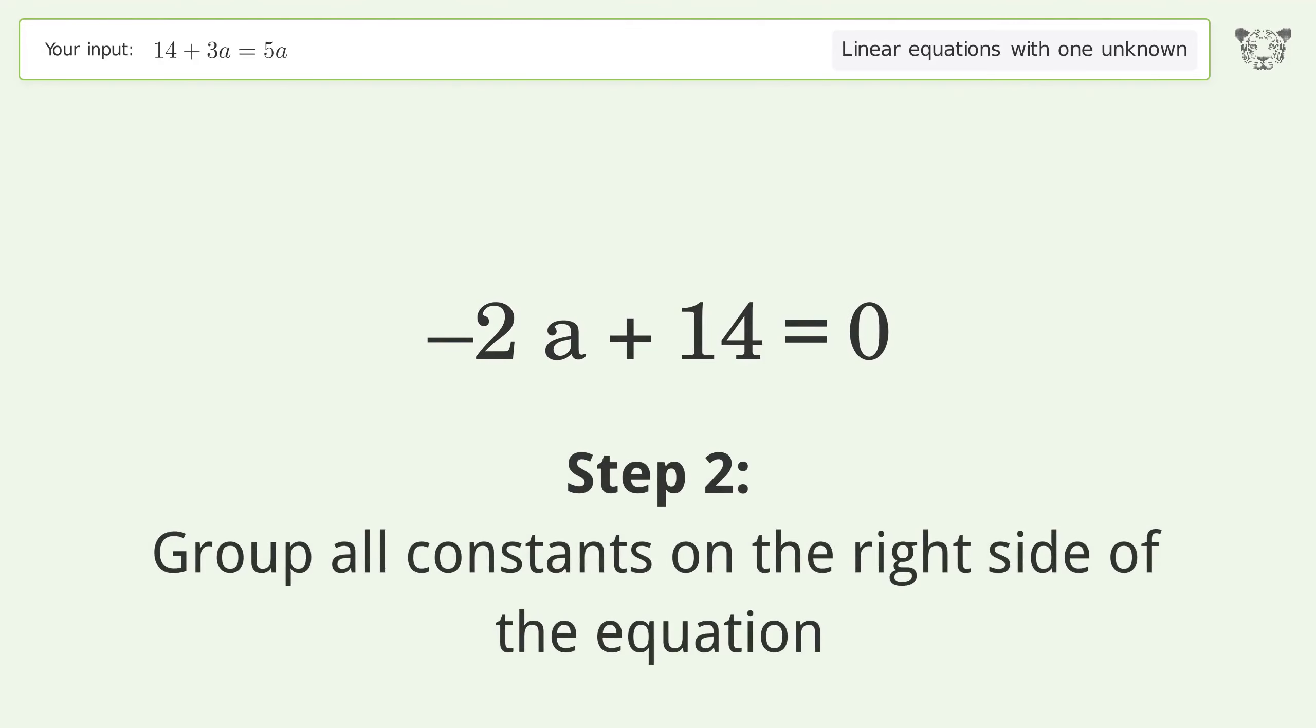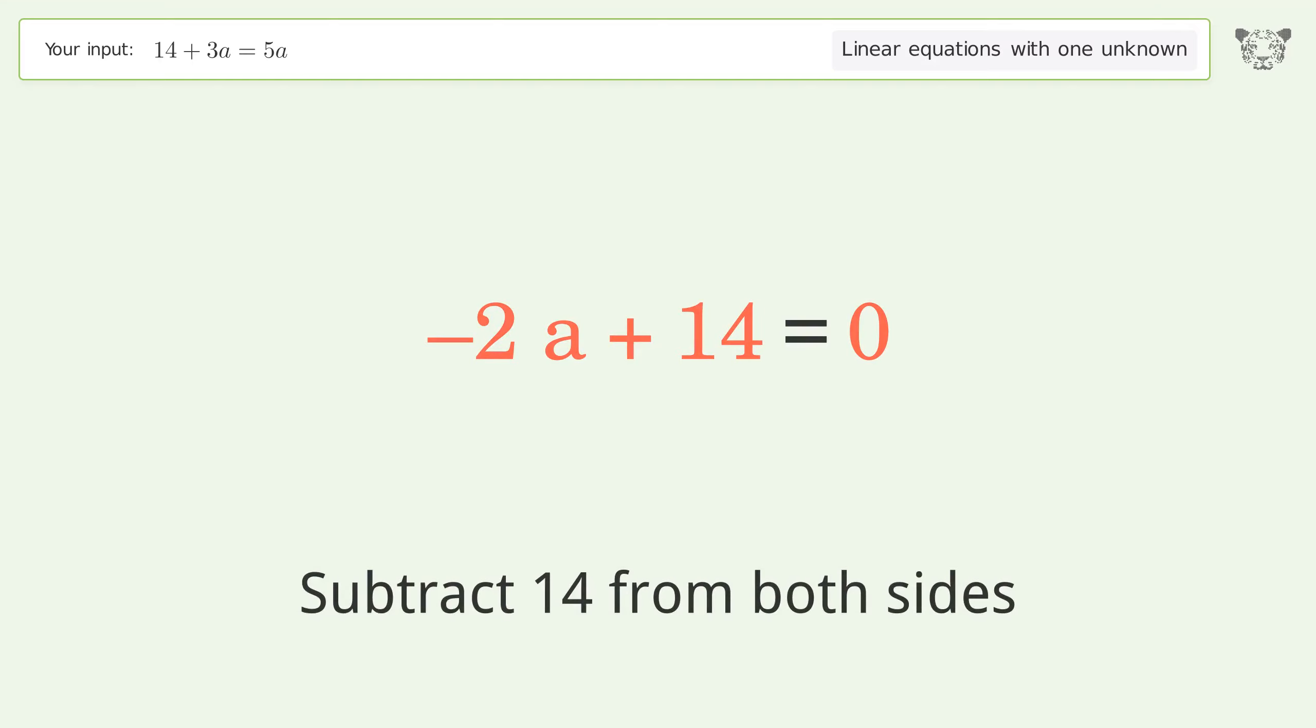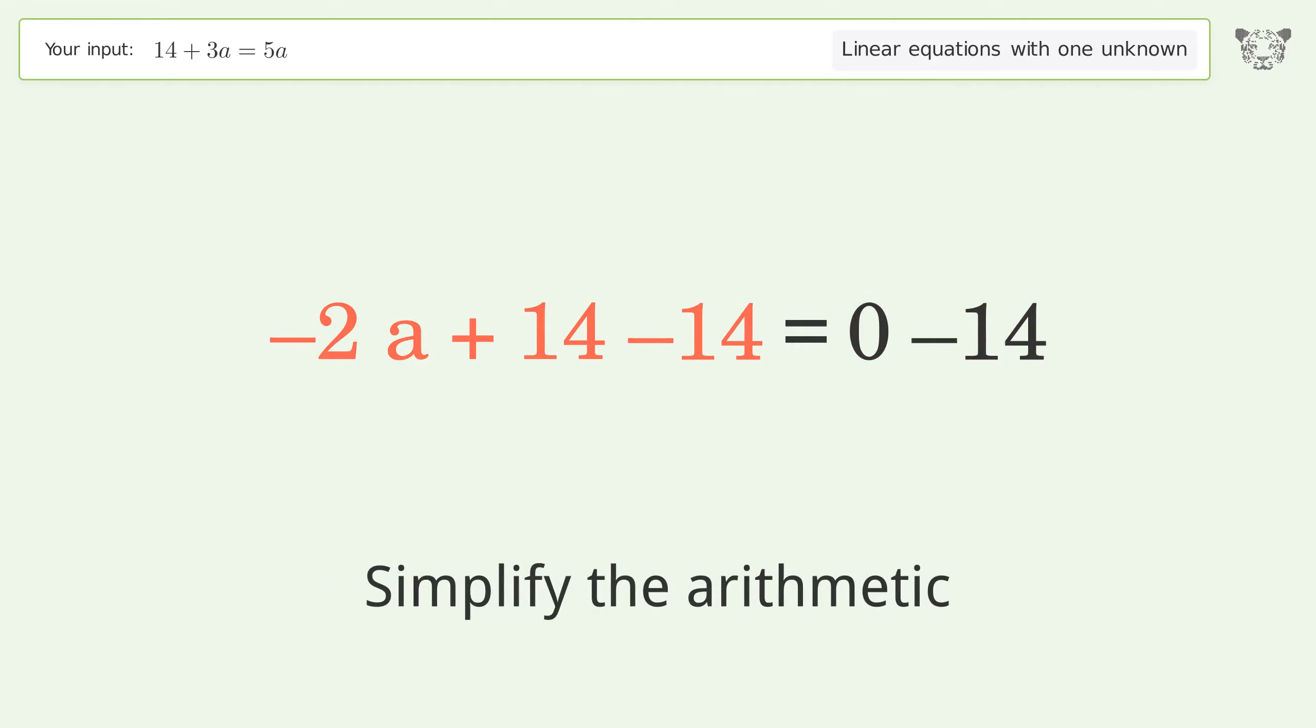Group all constants on the right side of the equation. Subtract 14 from both sides. Simplify the arithmetic.